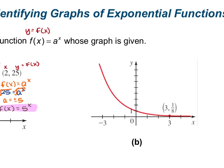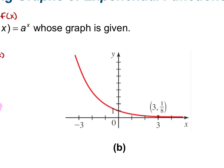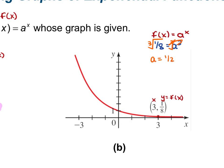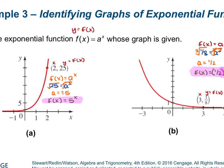For the second graph, we are given the ordered pair 3 comma 1 eighth. So 3 is our x and 1 eighth is our y, the same as f of x. Our function rule is f of x equals a to the power of x. Plugging in: 1 eighth equals a to the power of 3. To isolate a, take the cube root of each side. The cube root cancels the power and gives us just a. The cube root of 1 eighth is 1 half. So a equals 1 half, and we write f of x equals 1 half to the power of x. Whenever you have a fraction raised to a power, put parentheses around that fraction.